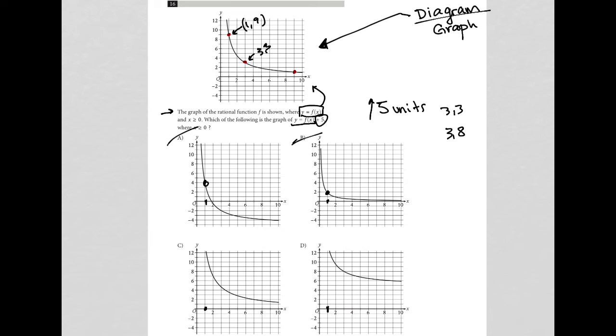So that's basically 3, 3, but the y value has gone up 5 units. So 3, 8 is what I'm looking for.